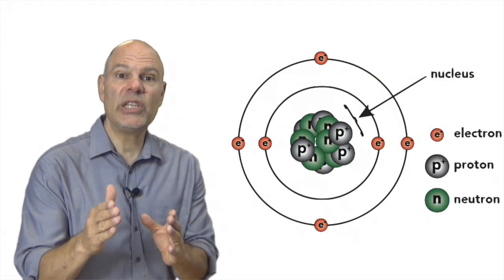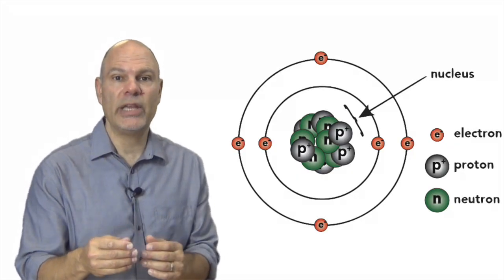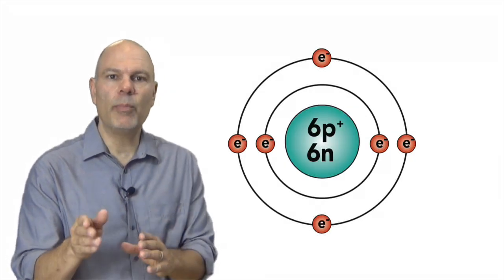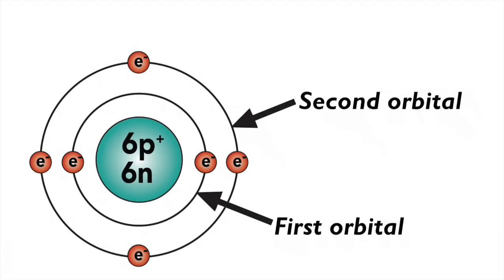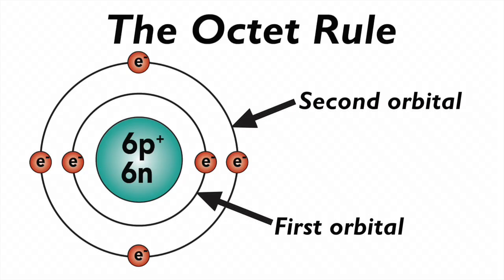Here's a carbon atom. For the rest of this video, we're going to simplify how we represent the nucleus. We're just going to show the numbers of protons and neutrons. What we're going to focus on are the electrons. Notice how in carbon there are two electrons in the first orbital and four in the second. This pattern follows a rule. That rule is called the octet rule, and it's the basis of this lesson.